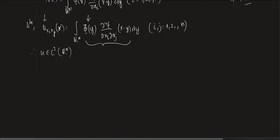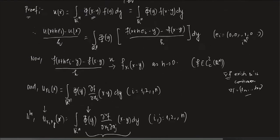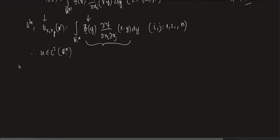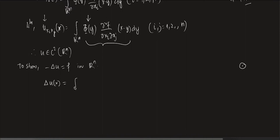Now the second part — this is the difficult part to prove. We have to show −Δu = f in ℝⁿ. Please remember that φ blows up near y = 0. So we are going to break ℝⁿ into two parts: a ball B(0, ε) of radius ε centered at the origin, and outside the ball. We take the integral in two parts. Δu(x) = ∫_{B(0,ε)} φ(y) Δₓf(x − y) dy + ∫_{ℝⁿ∖B(0,ε)} φ(y) Δₓf(x − y) dy.